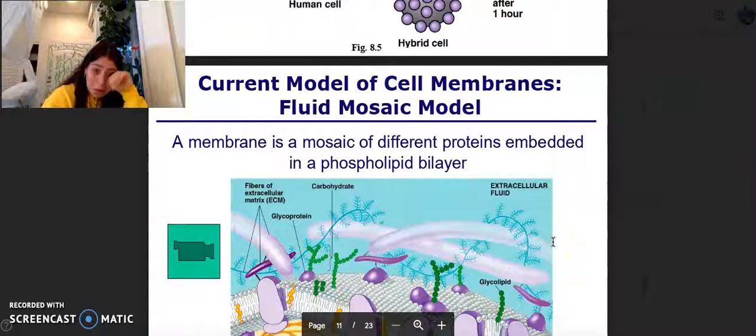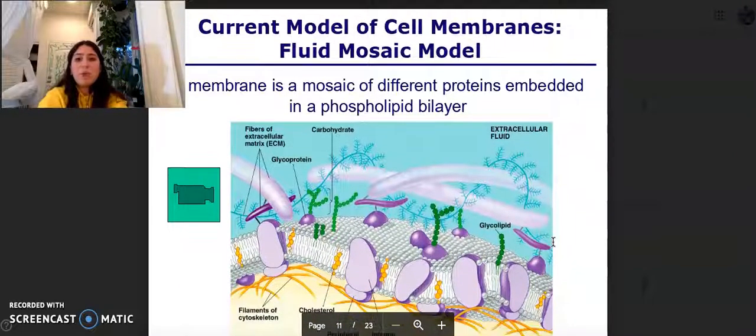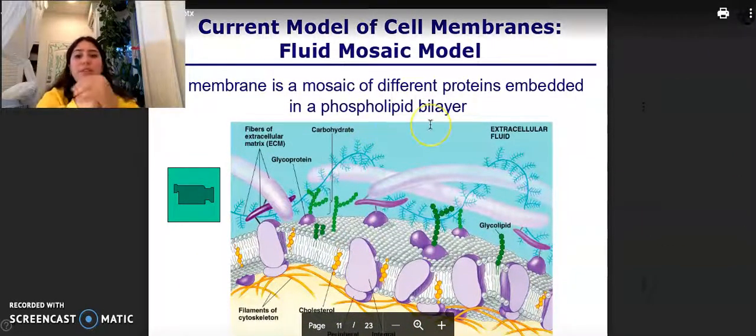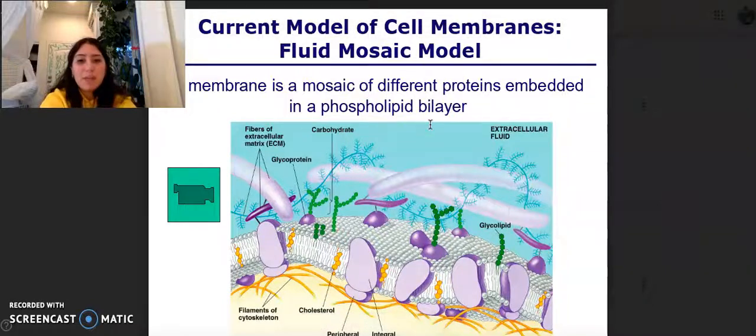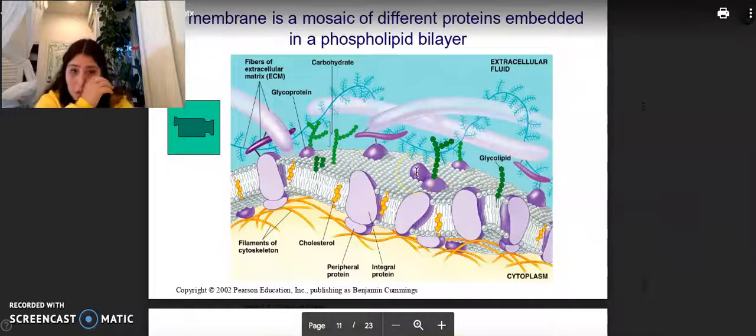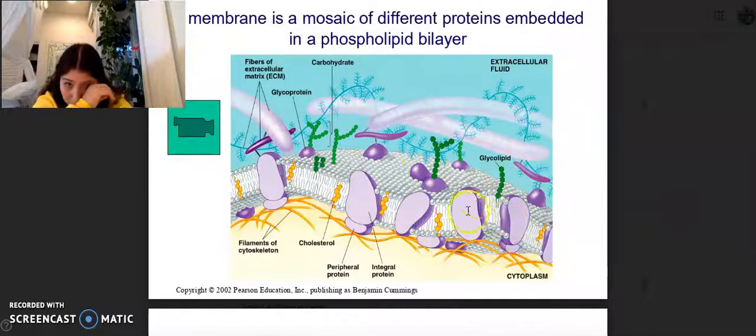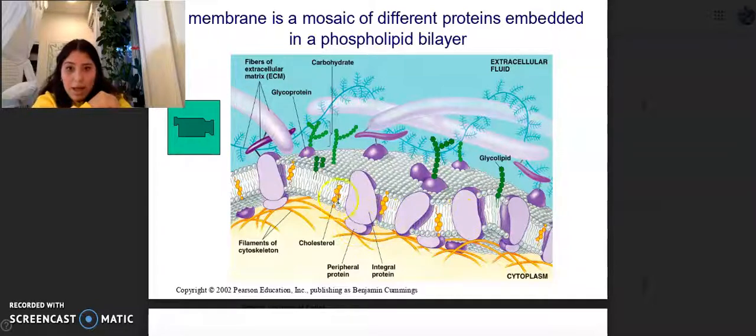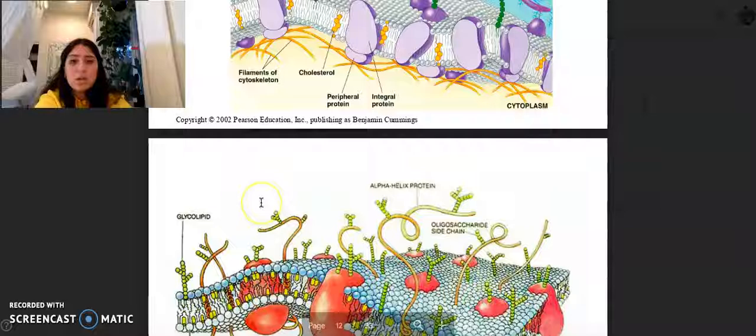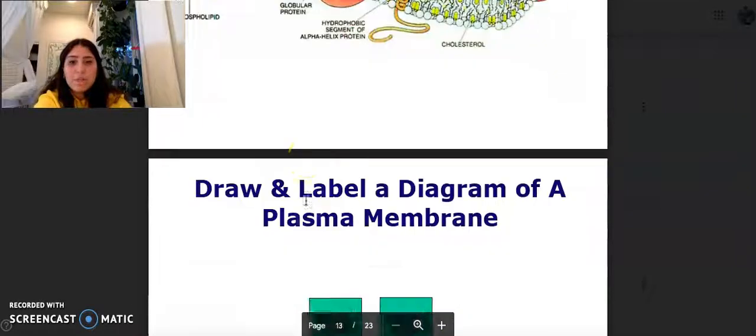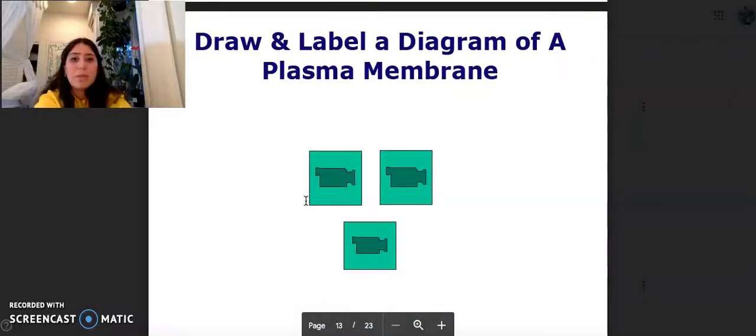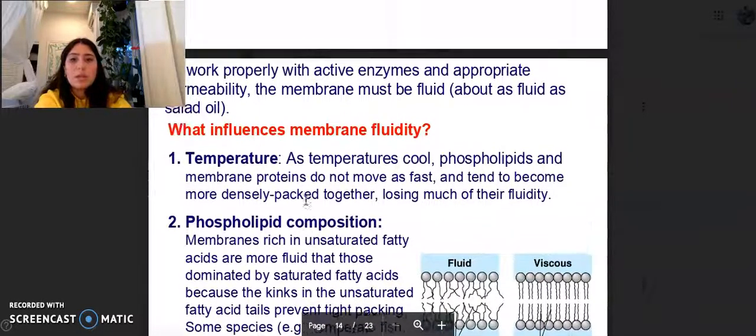The current model of cellular membranes is the fluid mosaic model and a membrane is a mosaic of different proteins embedded into a phospholipid bilayer. Here we go. Here's a glycolipid, here's an integral protein, chloroplast, here's another, here's a carbohydrate. Here's another picture. Draw and label a plasma membrane.